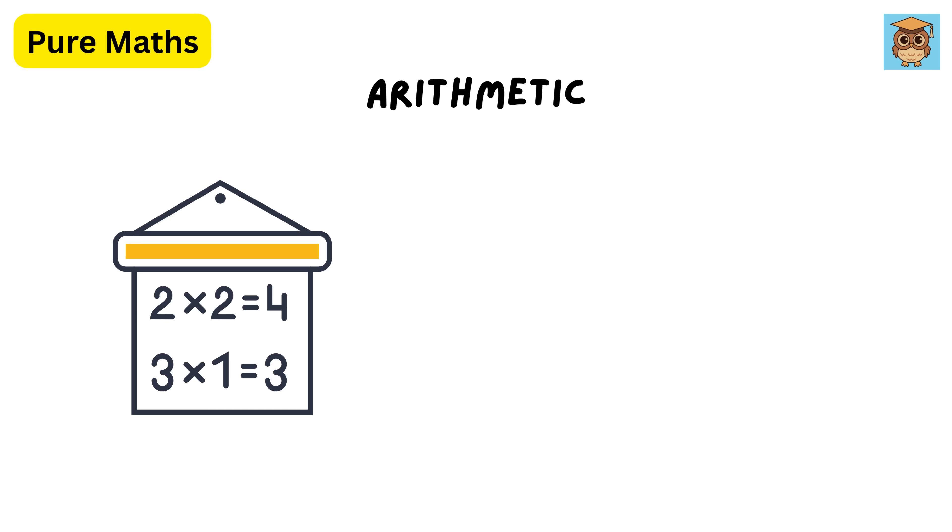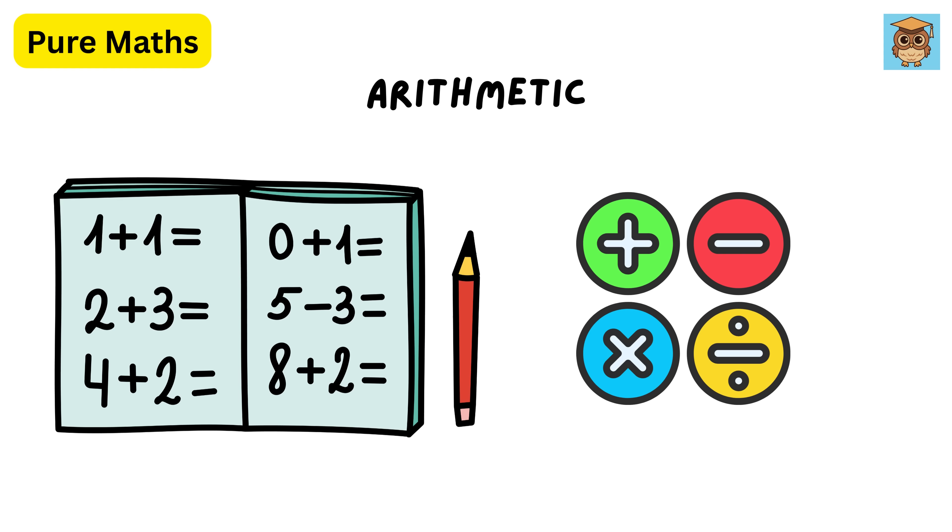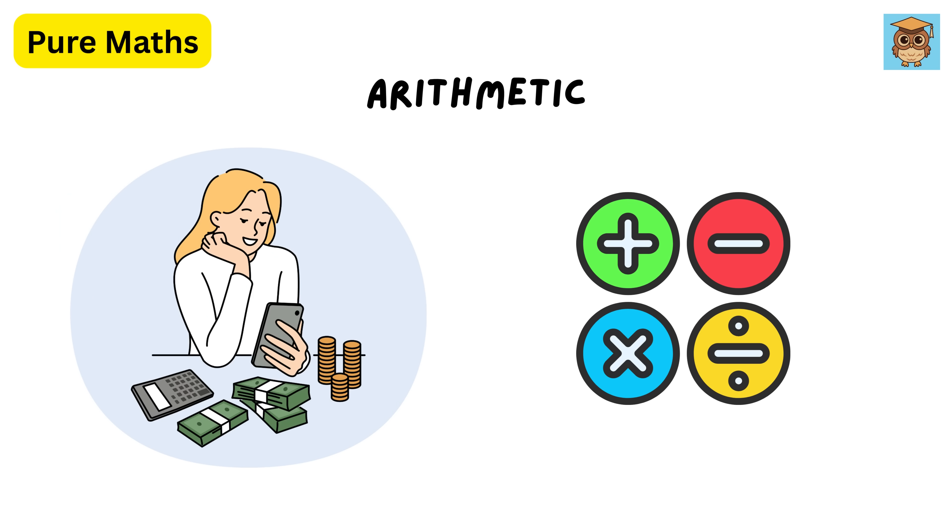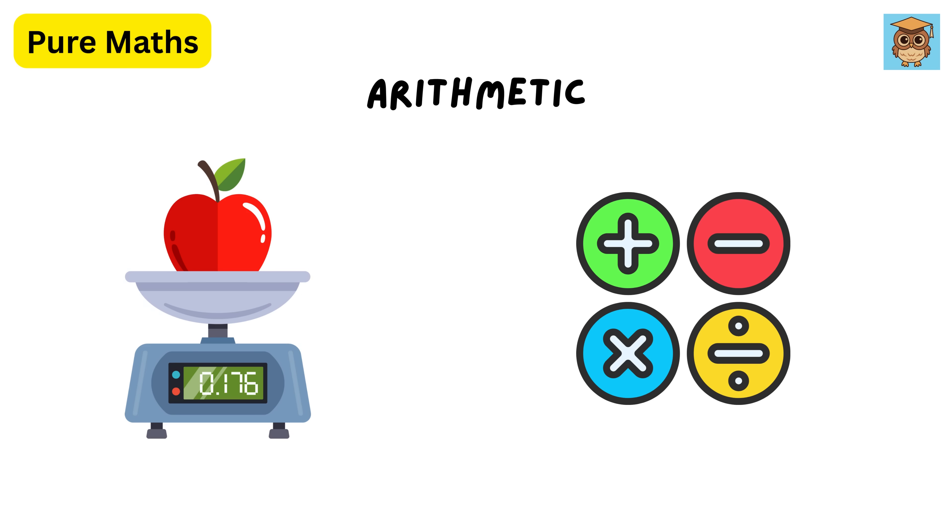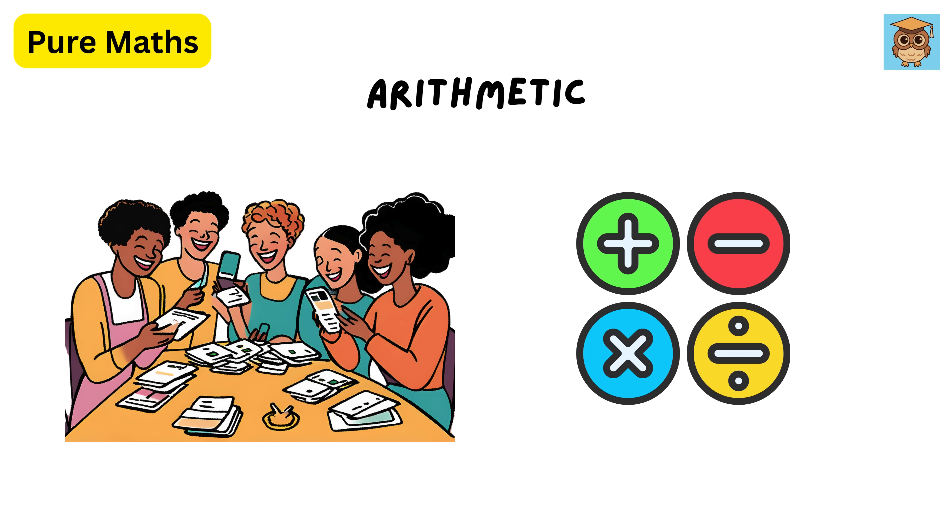Arithmetic is the simplest and oldest part of math. It's all about numbers and basic operations: addition, subtraction, multiplication, and division. It's the math you use every day when counting money, measuring ingredients, or splitting a bill with friends.